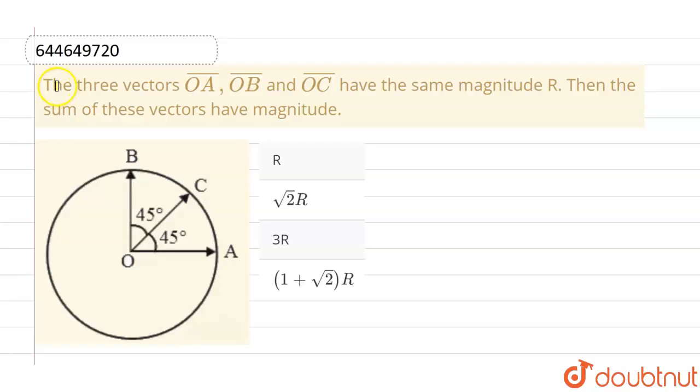Hello everyone. If we talk about this question, this given question is: the three vectors, the first one is OA vector, second is OB vector, and third is OC vector, have the same magnitude capital R. Then the sum of these vectors will have magnitude.